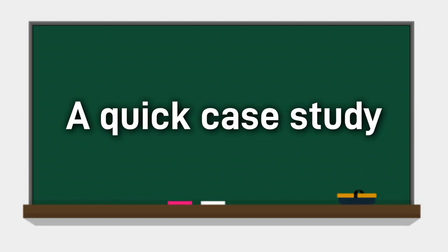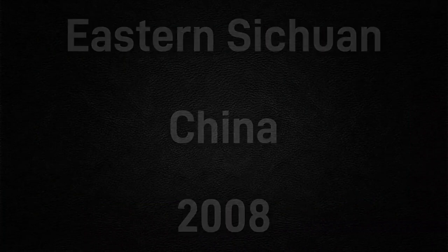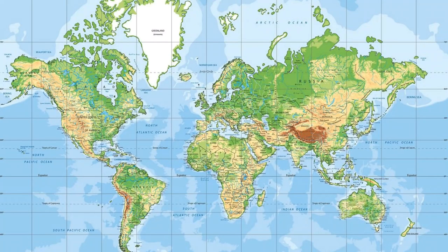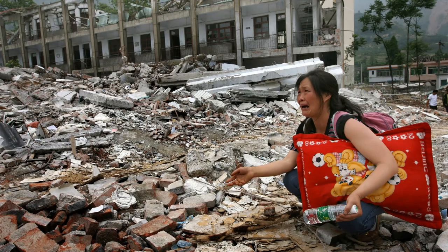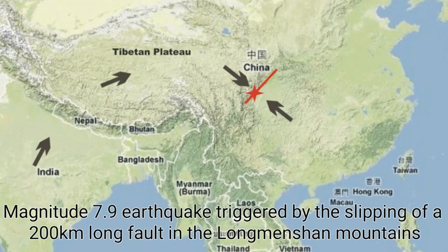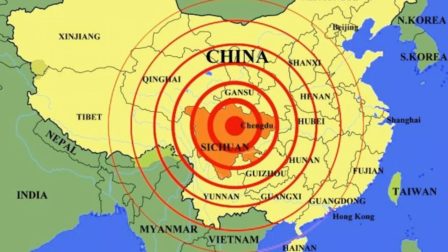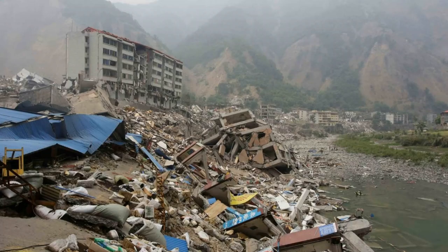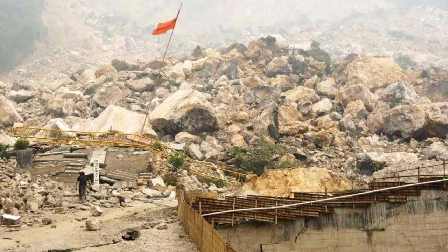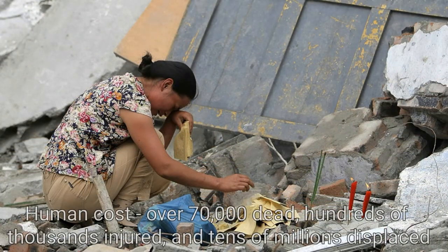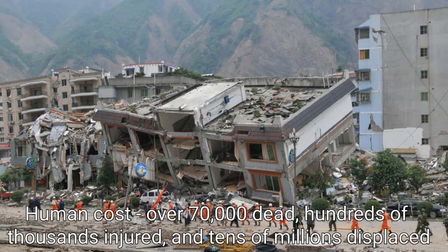Now that we have had an overview of earthquakes, let's look at a particular example. In May 2008, a magnitude 7.9 earthquake struck eastern Sichuan in China. It was one of the worst earthquakes to hit China in over 30 years. It was created when a 200km long fault in the Longmenshan mountains, near the boundary between the Indian and Asian tectonic plates, suddenly slipped between 2 and 9 meters. The tremors that were unleashed were felt throughout much of China, as well as other countries like Bangladesh, Thailand, and Vietnam. More than 5 million buildings collapsed, with landslides and rockfalls blocking roads and railway lines. Sadly, over 70,000 people lost their lives, with hundreds of thousands injured and tens of millions displaced from their homes.